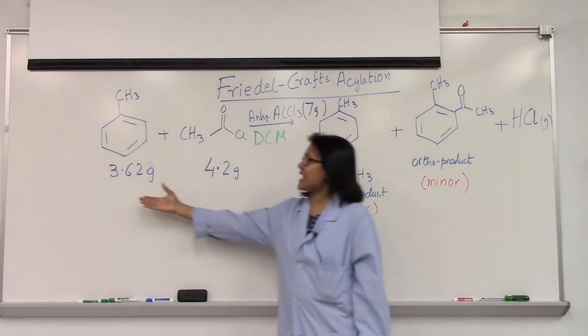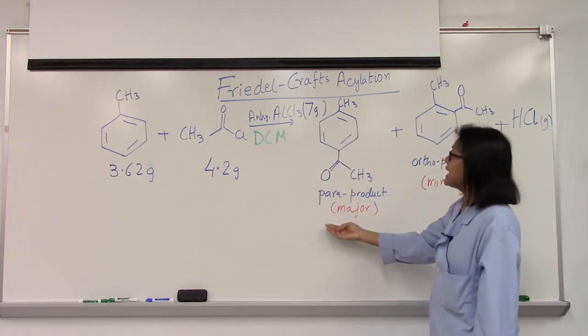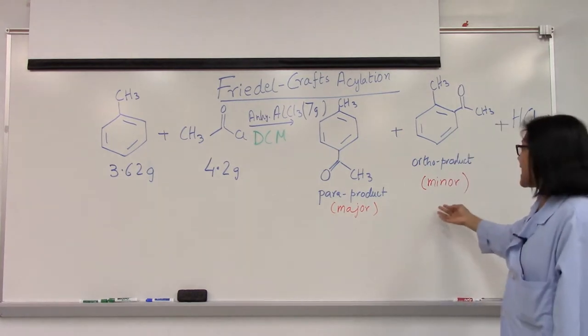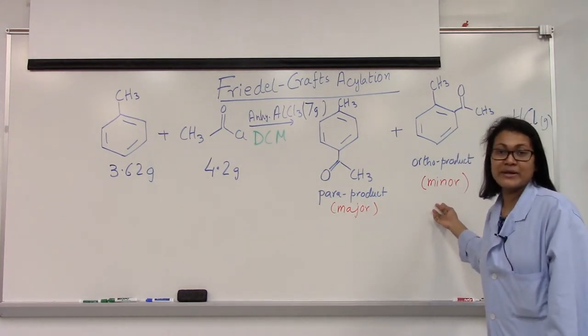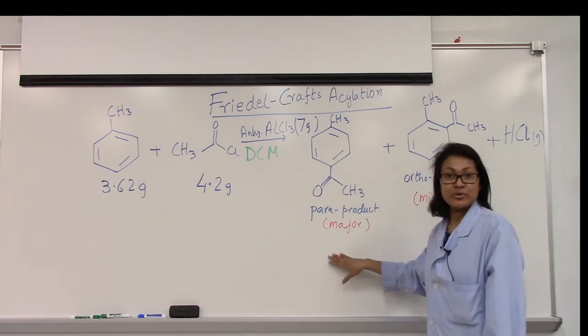The next step, we start adding the toluene mixture, and then we produce two possible products: the para-product as your major product and the ortho-product as your minor product. So due to steric hindrance, the para-product is your major product.